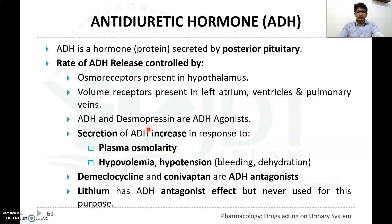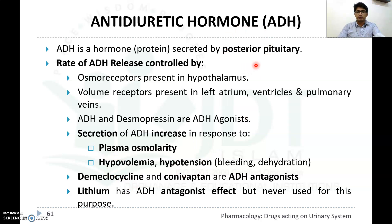ADH secretion increases in response to raised plasma osmolarity, hypovolemia, and hypotension. In hypovolemia, water volume in the body is decreased, so ADH is produced from the posterior pituitary to prevent further water excretion. ADH antagonists include demeclocycline and conivaptan. Lithium, used in bipolar disorder, also has an ADH antagonist effect, though it is not used for this purpose.